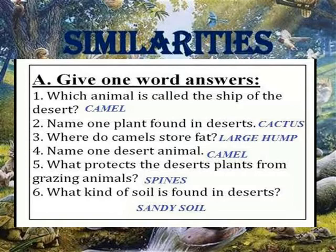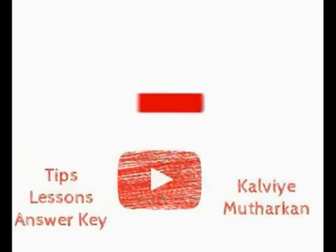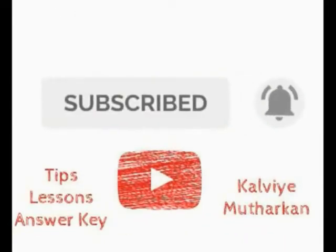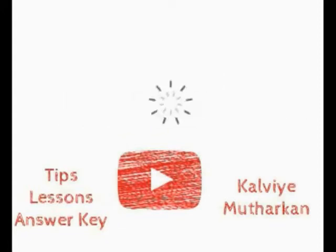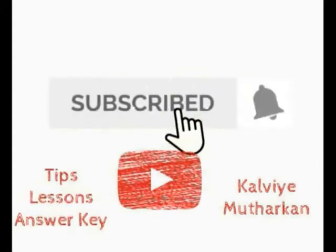Name one desert animal. Camel. What protects the desert plant from grazing animals? Cactus.